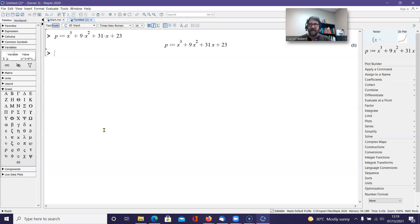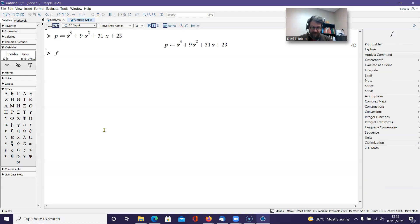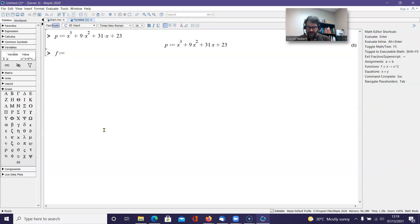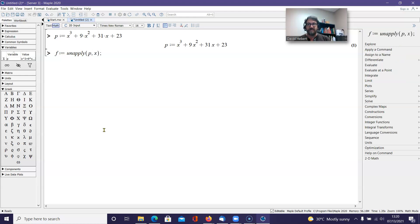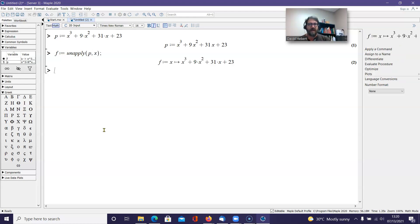I do want to get a function for this. So I'm going to let f be assigned the value of unapply. You'll remember from the previous video, this is how I can turn it into a function that lets me substitute values into it. So f is now something I can substitute into.